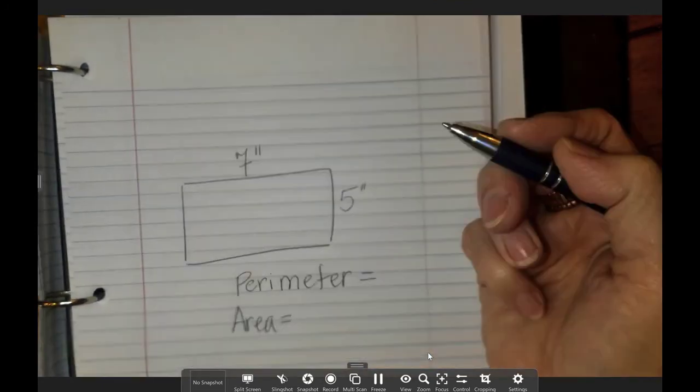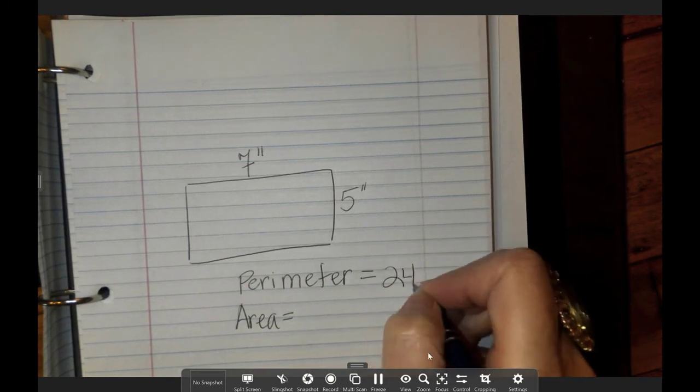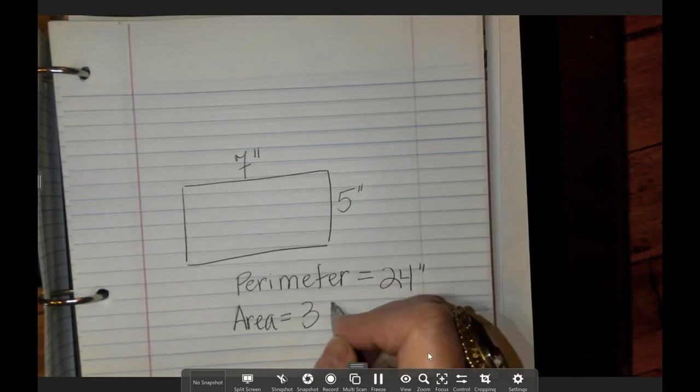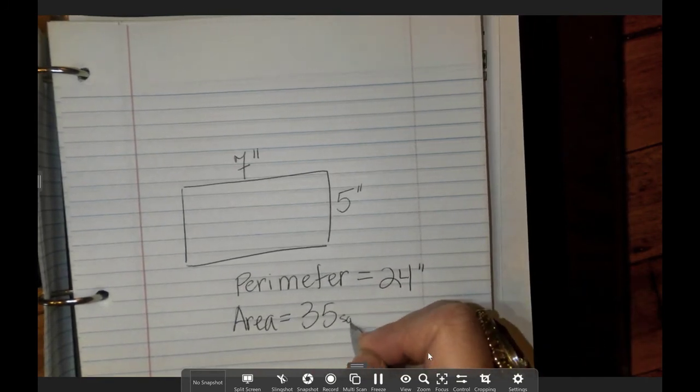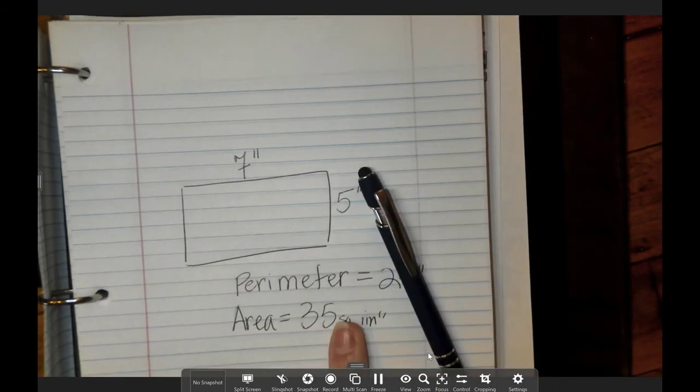Easy. Perimeter is going to be 24, right? And area, that's going to be 35 square inches. And that is today's teachable moment: different ways to use whiteboards in a digital environment.